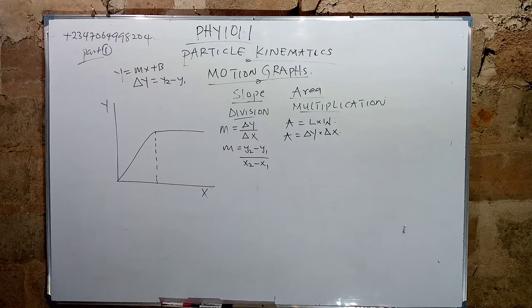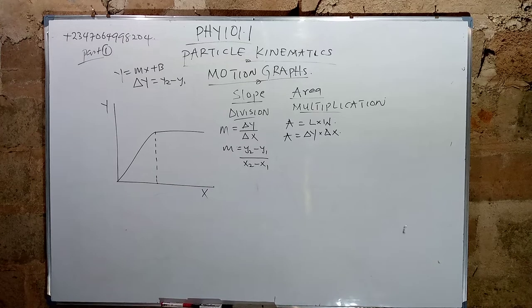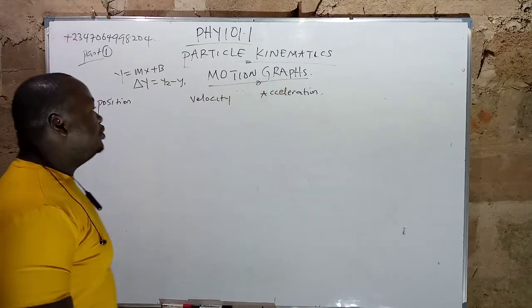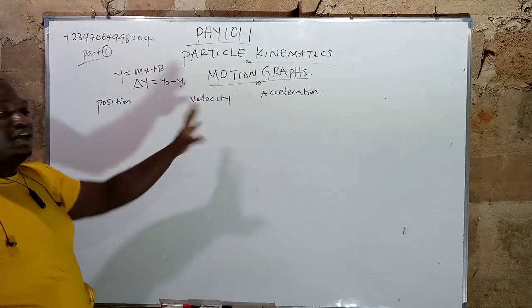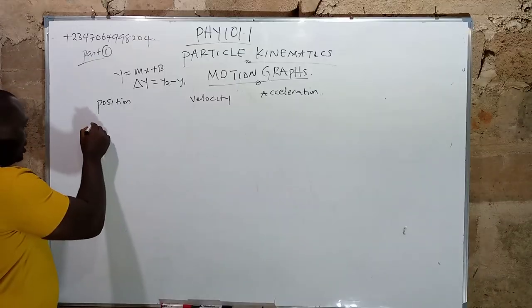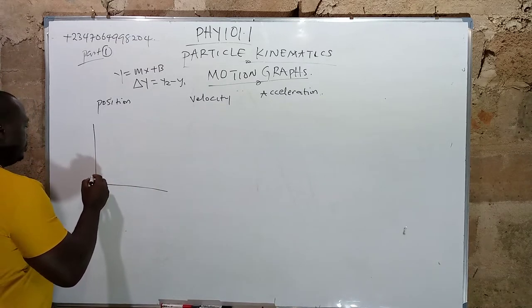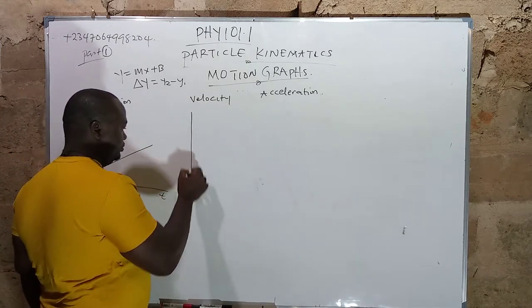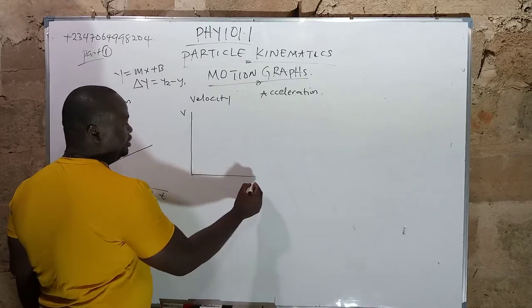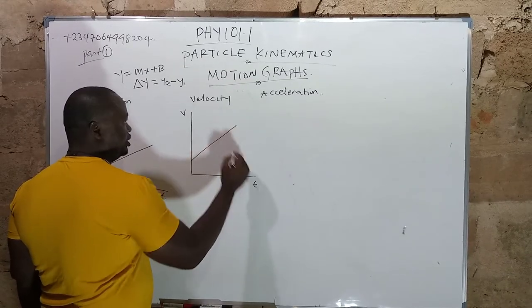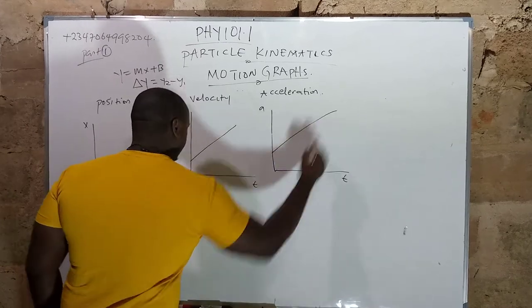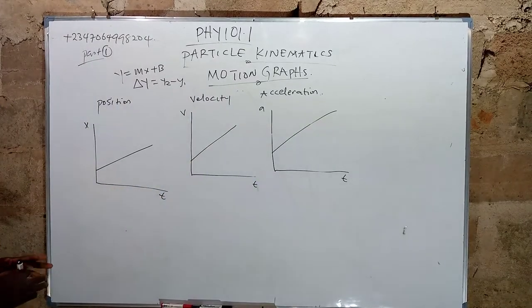Now at the board we have three graphs: the position graph with axes x and t, the velocity graph with axes v and t, and the acceleration graph with axes a and t. We will talk about each one of them.